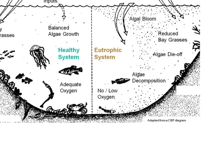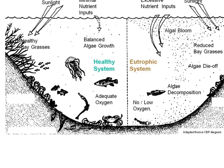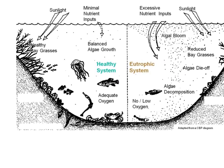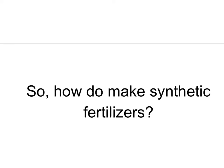In contrast, this system here is healthy — we can see there's adequate oxygen and more biodiversity. Minimal nutrient inputs is actually what a system needs because these systems have evolved with those limiting factors, and that's a more balanced system.